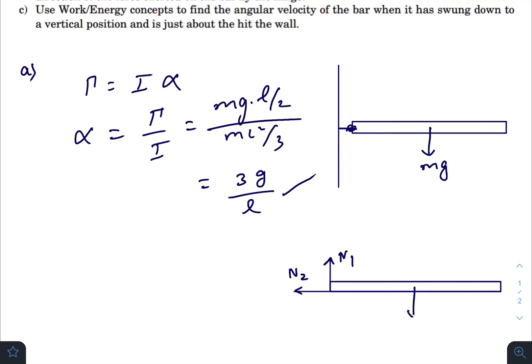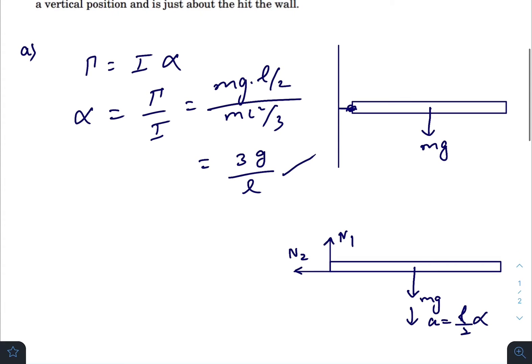One is mg and the acceleration of the center of mass is L by 2 times alpha because this distance is L by 2. So the acceleration is only along the vertical direction, so net force in the vertical direction equals mass times acceleration.